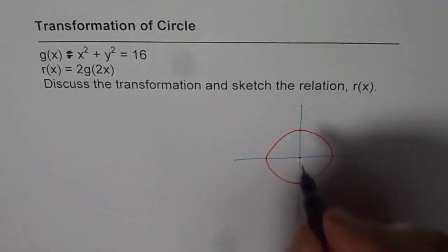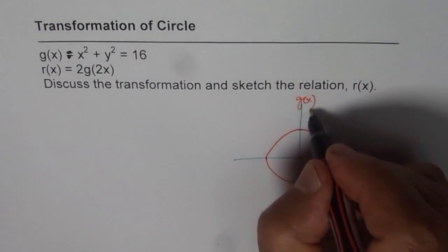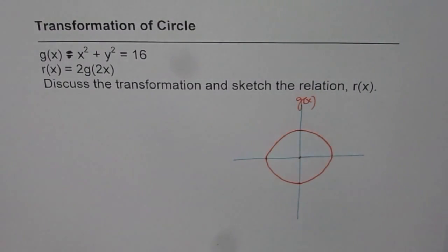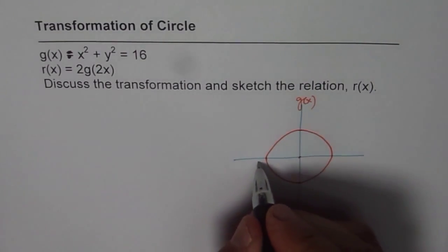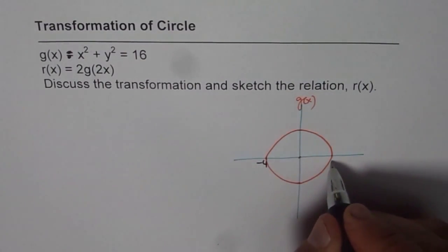This is g of x. So I have drawn g of x where x and y intercepts are plus and minus 4. These are the intercepts.